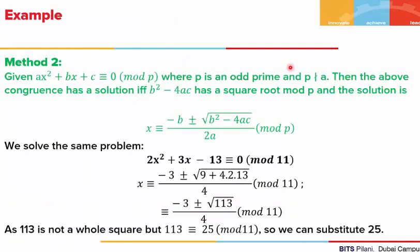Moving on to the second method. Given ax² + bx + c ≡ 0 mod p, where p is an odd prime and p does not divide a, the congruence has a solution if and only if b² - 4ac has a square root mod p. The solution is x ≡ (-b ± √(b² - 4ac)) / (2a) mod p — analogous to the standard quadratic formula.